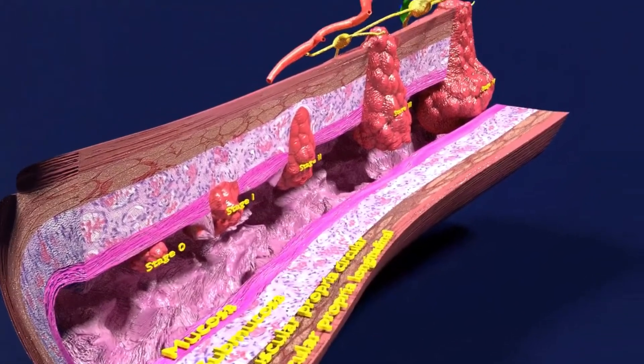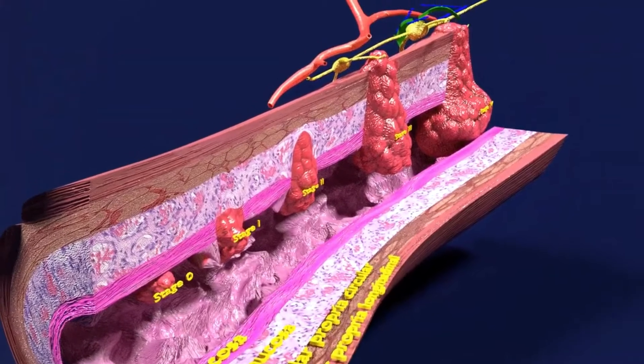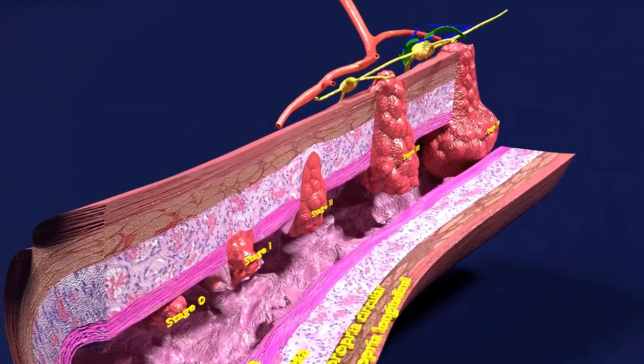You can appreciate here the blood vessels and lymphatic supply to the outermost layer of colon.